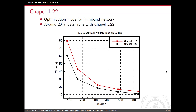We also want to update these results with the latest version, Chapel 1.22, because Cray made some initial optimizations for InfiniBand networks in this release. We were curious whether there would be any improvements in computational time. We are actually getting around 20% faster runs with Chapel 1.22 compared to 1.19, and we didn't have to do anything to get that 20% improvement — which is amazing.